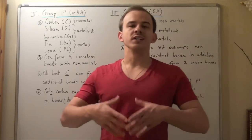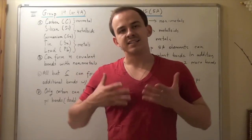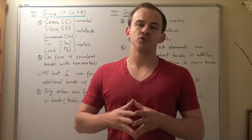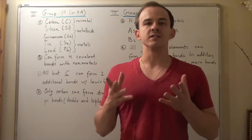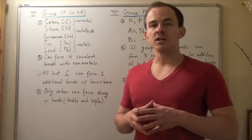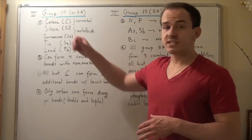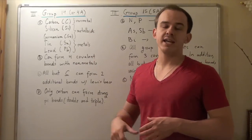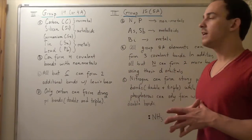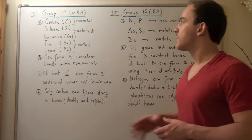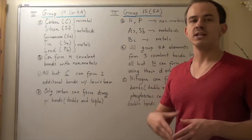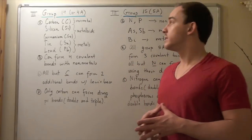In this lecture, we're going to look at and compare two more important groups found in our periodic table. We're going to look at group 14 or 4A and group 15 or 5A elements. Now let's begin with the group 14 or 4A elements.